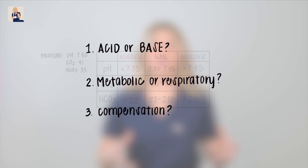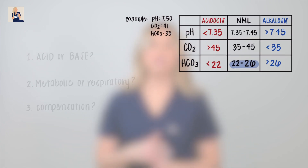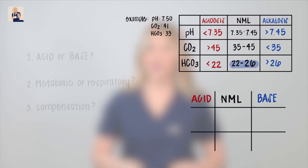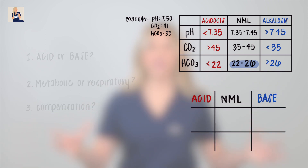To do this, we're going to apply the tic-tac-toe method. Draw a tic-tac-toe board just like mine. We label the top acid, normal, and base. All we have to do is plug in the numbers and interpret.